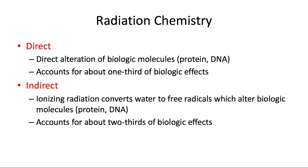Radiation affects our cells through two modes of action: direct and indirect. Direct action refers to direct alteration of biologic molecules like proteins and DNA, involving single or double strand breaks. The direct effect is dominant for alpha particles and neutrons, but accounts for only about one third of biologic effects for x-rays. Indirect action refers to ionizing radiation converting water to free radicals within human tissue, which then alters proteins and DNA. Indirect action is the dominant process for x-rays and gamma rays, accounting for about two thirds of the biologic effects.